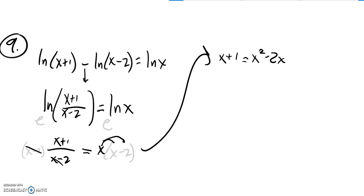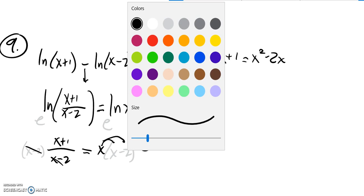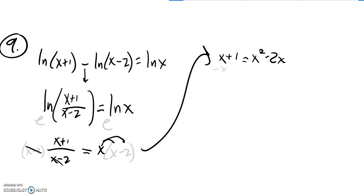So now I have a quadratic that I've got to solve. So what I'm going to do now is subtract x from both sides, get this thing equal to 0. So minus x. I think I'll subtract 1 from both sides as well. And what I end up with then is 0 equals x squared minus 3x minus 1.